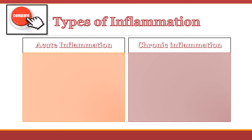The next question is: does inflammation have only one type or more than one type? Inflammation is mainly classified into two types: acute inflammation and chronic inflammation. To understand acute and chronic, we will make a comparison. Acute inflammation is a rapid process that starts immediately after the injury, while chronic inflammation usually has a gradual onset — it takes time to develop after the injury happens.